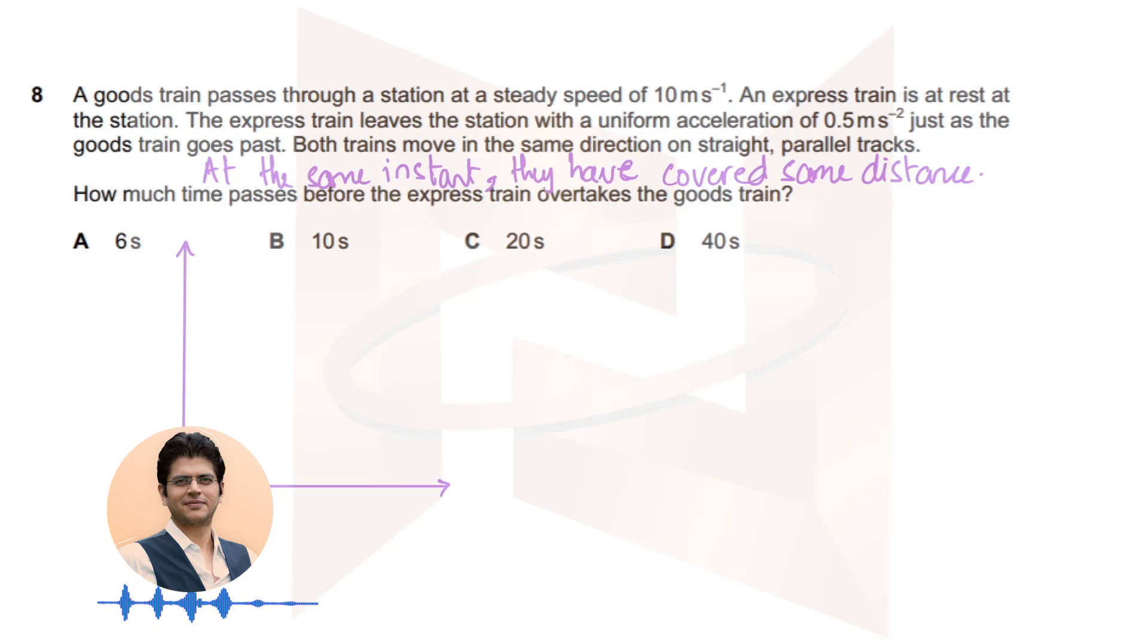Now in questions like question number 8, in which they have two objects, one is a goods train, let's call it G, and the other is an express train, let's call it E.